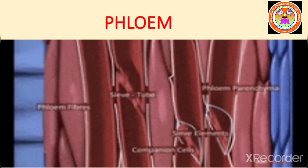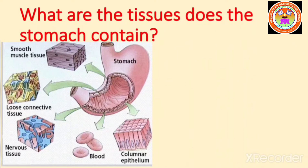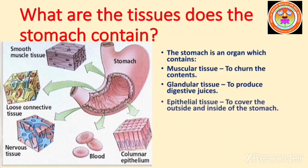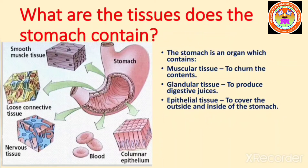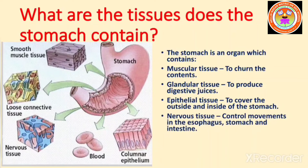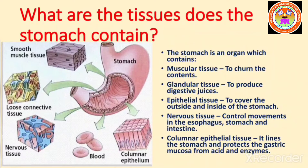Similarly, in animals, what tissues does the stomach contain? The stomach is an organ which contains muscular tissue to churn the contents, glandular tissue to produce digestive juices, and epithelial tissue to cover the outside and inside of the stomach. Nervous tissue controls movements in the esophagus, stomach, and intestine. It contains columnar epithelial tissue, which lines the stomach and protects the gastric mucosa from acid and enzymes.